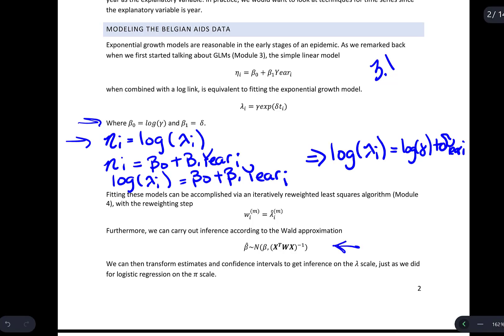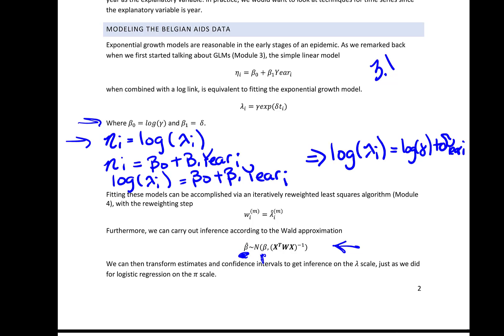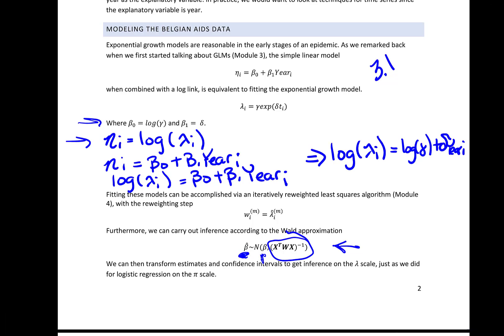As a reminder, our beta-hat — which can represent a vector of betas, so here both beta_0 and beta_1 — is normally distributed with mean equal to the true betas and a covariance matrix from the weighted least squares estimate. This looks very similar to what we saw with linear regression, but remember we do have that weight matrix W in the center. We can then transform the estimates and confidence intervals to get estimates on the lambda scale, just like we did with logistic regression when we wanted things on the pi scale.